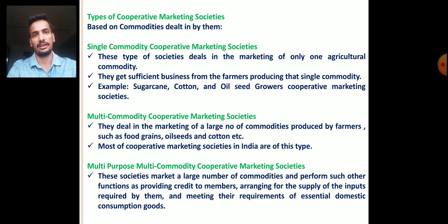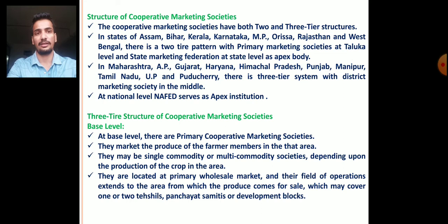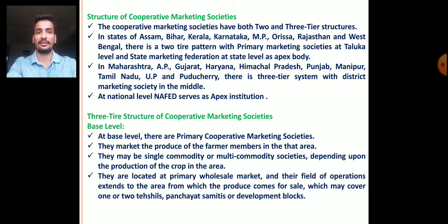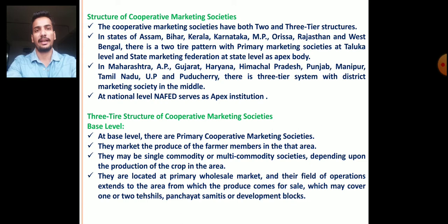Next is the structure of cooperative marketing societies, which is an important part of this topic and may be asked in semester examinations. Cooperative marketing societies have both a two-tier structure and a three-tier structure, similar to what we have learned in the finance and credit course. In states like Assam, Bihar, Karnataka, Madhya Pradesh, Orissa, Rajasthan, and West Bengal, the two-tier pattern is adopted — with primary marketing societies at the Taluka or Block level, and directly a State Marketing Federation at the state level as the apex body.